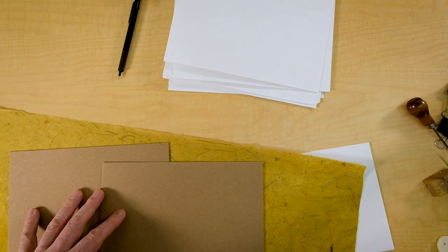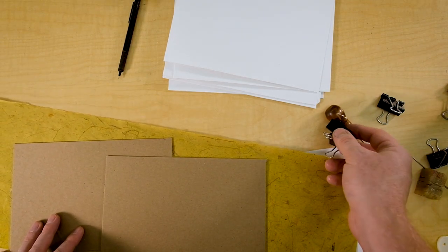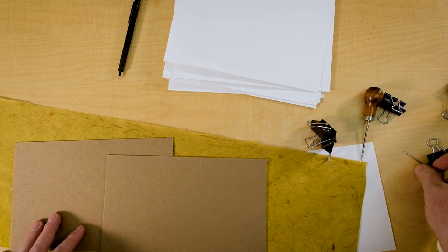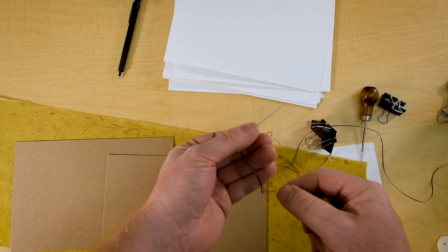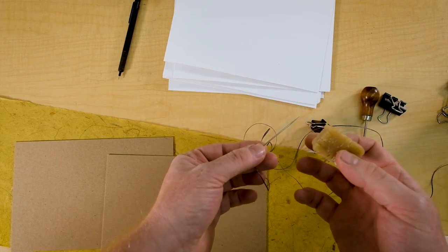Then you'll need a ruler, some scissors, binder clips are nice, an awl sewing needle with a big head and some embroidery floss to do the binding.